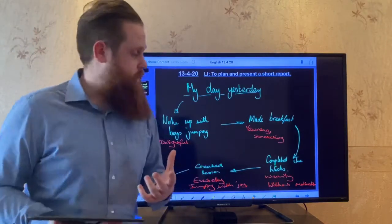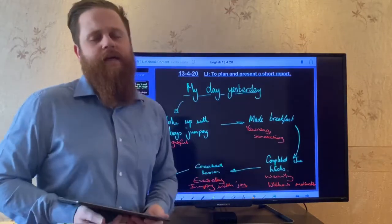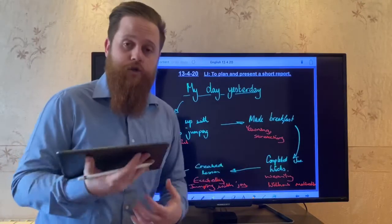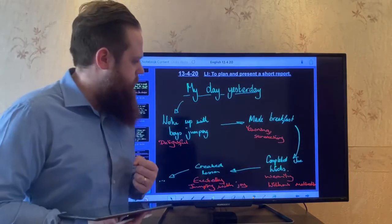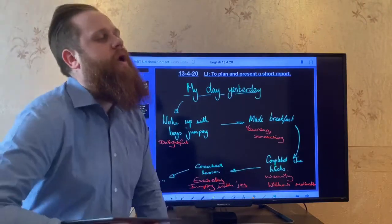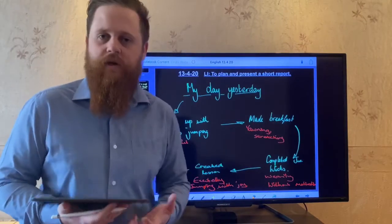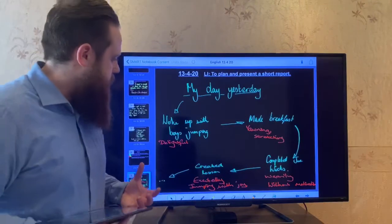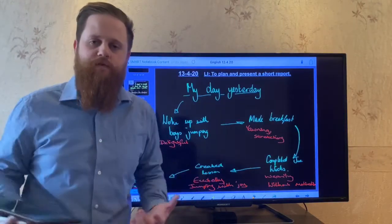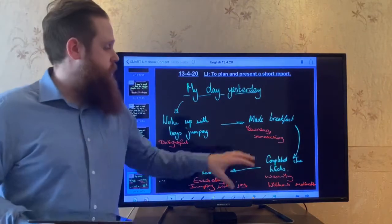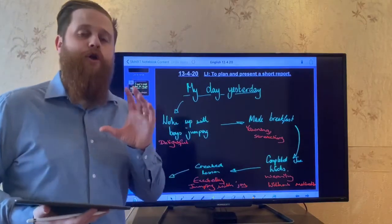The next one, made breakfast. Keywords I might want to use. But powerful words as well. Yawning. Stretching. And I could use these in my spoken report. What happened next? I completed the Joe Wicks workout to wake up for the morning. Wearily. I was weary as I was doing it. Without motivation. I was tired. Or maybe I was bouncing around like a jumping bean. What did I do next? I created this lesson. Well, it's our first English lesson back. So excitedly. Jumping with joy. And these would help me as I'm talking to make sure that I use these keywords in my sentences.